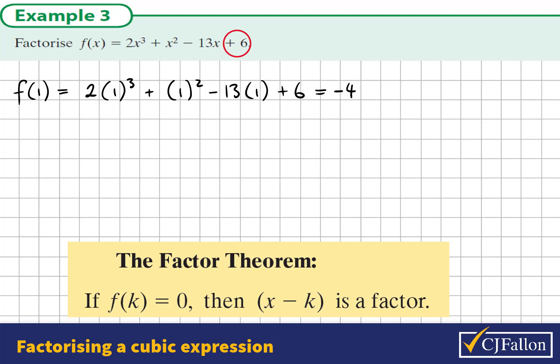Negative 4 is not equal to zero, that's the key point. So 1 is not a solution, that definitely doesn't work. So we might try another one, maybe try the number 2. 2 is a factor of 6.